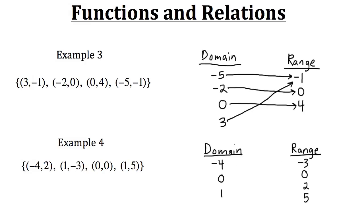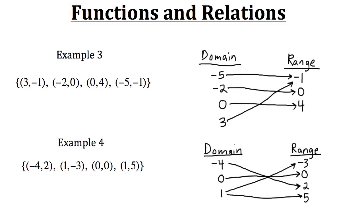Now let's make a mapping diagram linking inputs from the domain to their respective outputs. Negative four has an output of two, so we match negative four with two. The input one has an output of negative three. The input zero has an output of zero, so we connect zero from the domain with zero from the range. Finally, the input one also has another output which is five. That's what the mapping diagram looks like for example four, showing how the inputs from the domain are related to the outputs in the range.